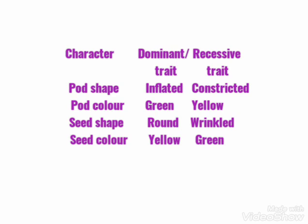Round and wrinkled are traits of seed shape — a character. Yellow and green are traits of seed color — another character studied by Mendel.